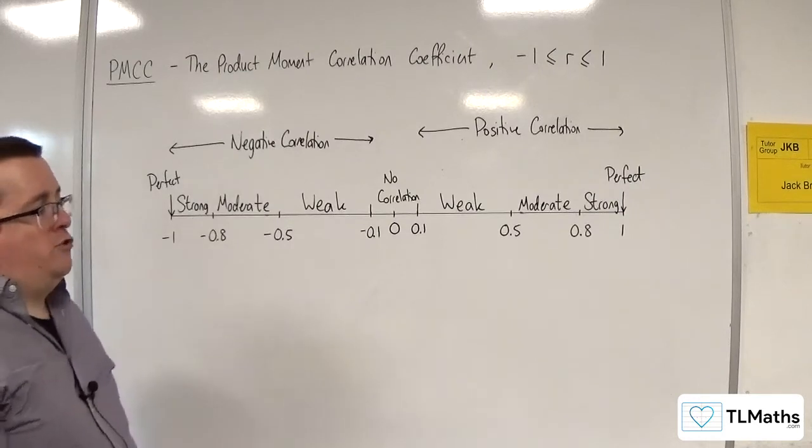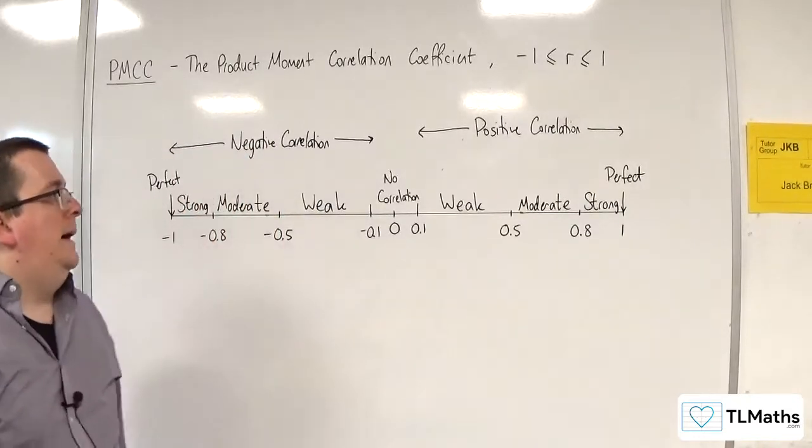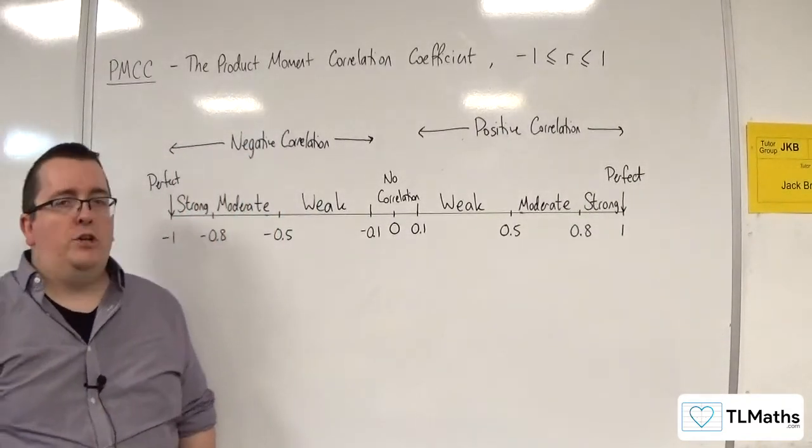So when we describe correlation, we want to include some kind of strength with it, just so we can understand how close to minus 1 or 1 it actually is.